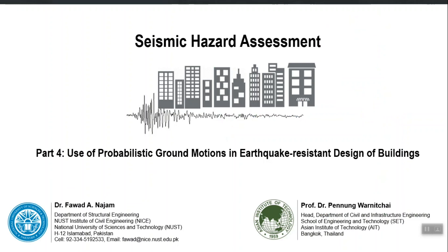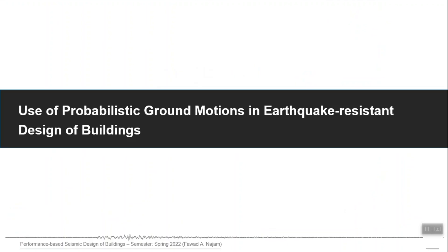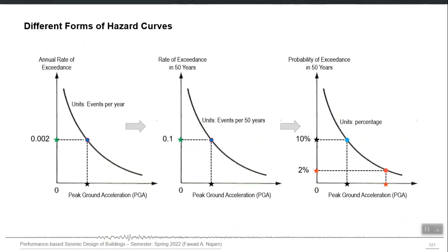Let us connect all that information into the earthquake resistant design of buildings — a summary of those concepts required before we move forward. We have different forms of hazard curve, but the last one is more convenient to understand probability of exceedance in 50 years, if 50 years is our design life or period of interest.